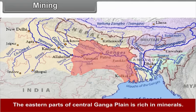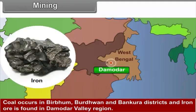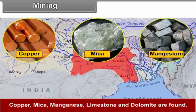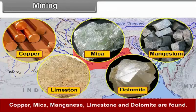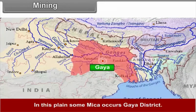Mining. The eastern part of the central Ganga plain is rich in minerals. Coal occurs in Dhanbad, Burdwan and Bankura districts, and iron ore is found in the Damodar Valley region. Copper, mica, manganese, limestone and dolomite are also found. Some mica occurs in Gaya district.